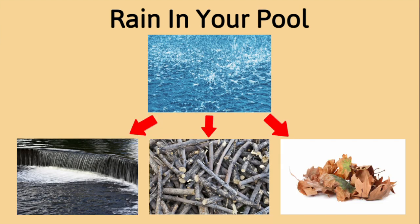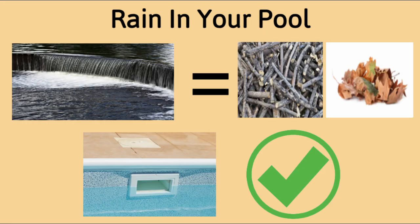Rainwater can cause a number of problems with your pool. First, it can cause your pool to overflow, allowing debris and other organic materials to enter your pool. High water levels will decrease your skimmer's ability to clear the top of your pool.